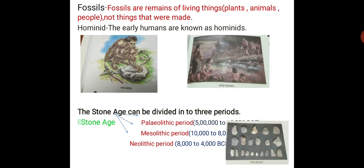The Paleolithic period lasted from 500,000 to 10,000 BCE. The Mesolithic period lasted from 10,000 to 8,000 BCE. The Neolithic period lasted from 8,000 to 4,000 BCE. Today I will cover the Paleolithic period and its features.